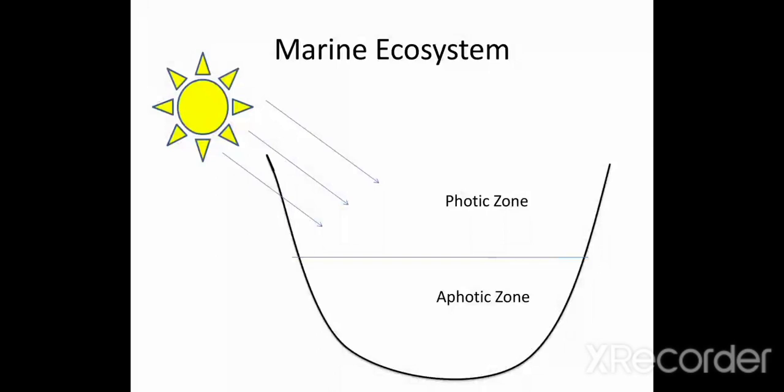The region till light penetrates in a marine ecosystem is photic zone. As we go deep in the water, there will be no light. This zone is aphotic zone. Organisms which do activity of photosynthesis will stay in photic zone.